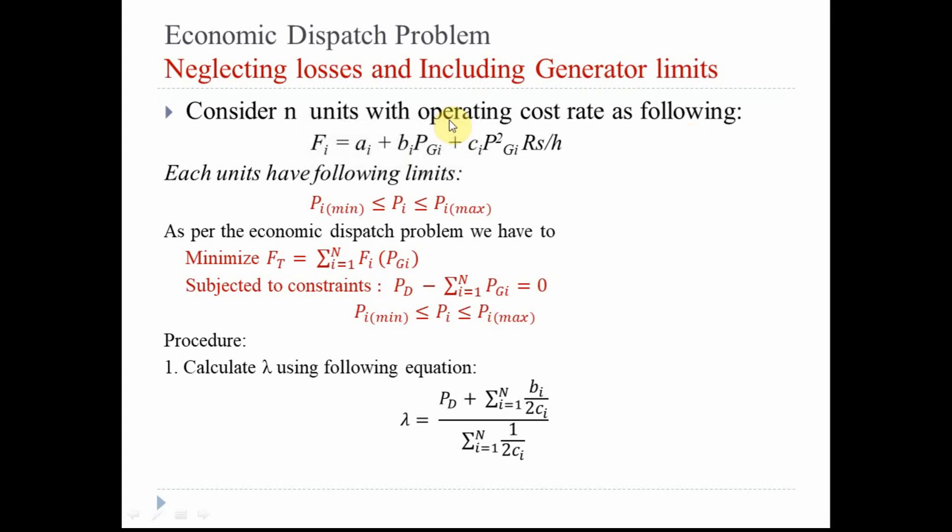In this lecture we will see how to solve the economic dispatch problem when generator limits are considered. In the previous lecture we solved the problem where both losses as well as generator limits were excluded or neglected. The only constraint considered was the equality constraint. Now in this section we will be considering both equality as well as inequality constraints.